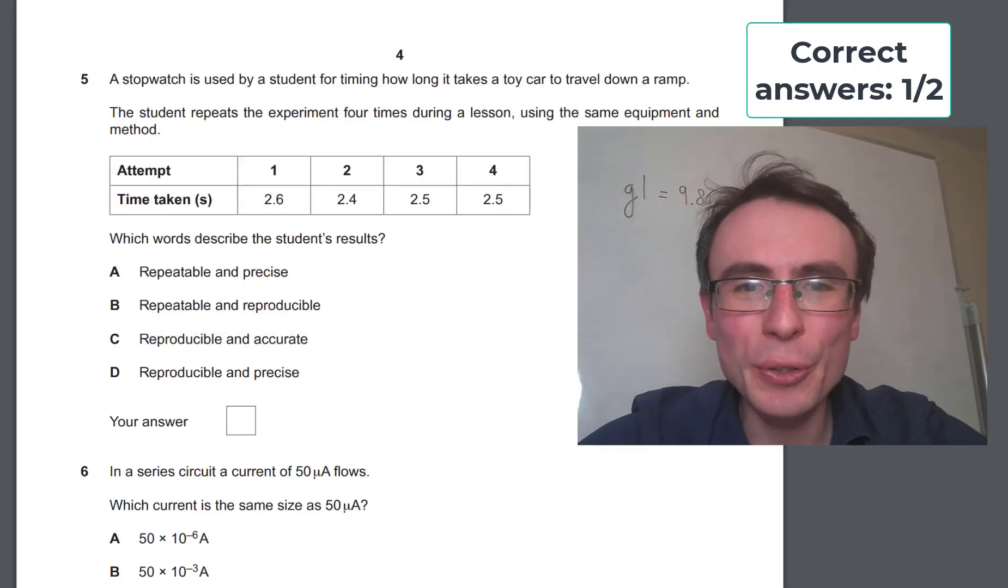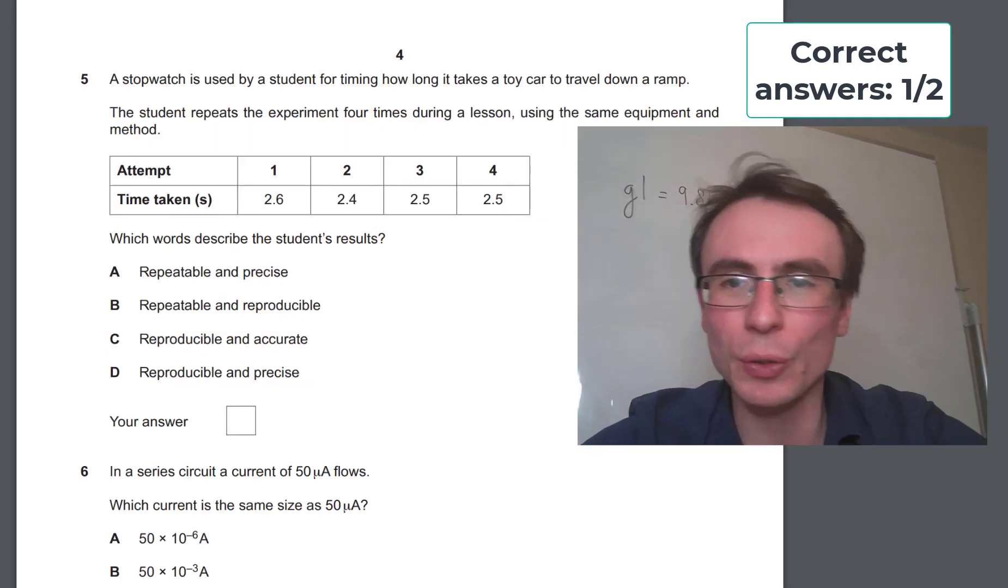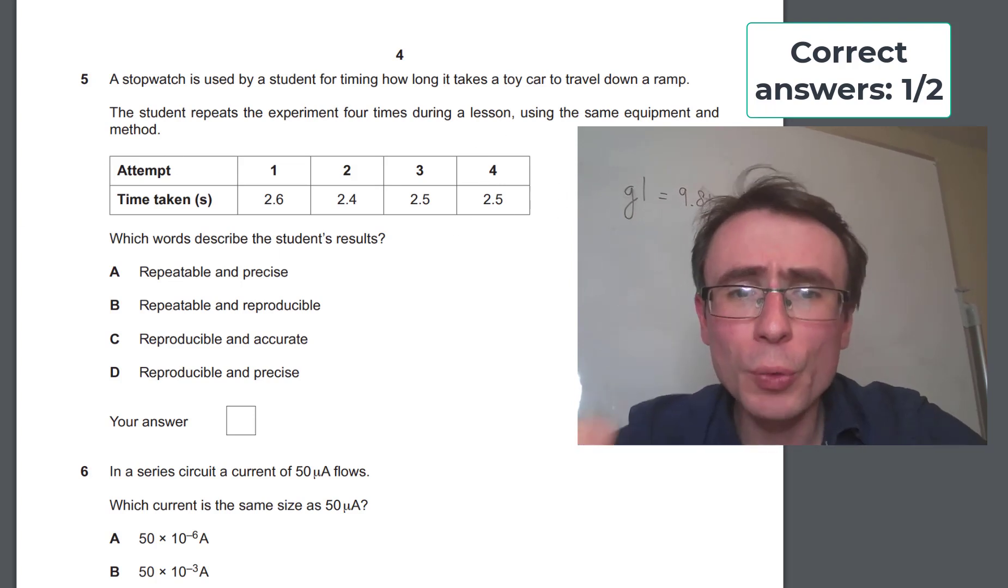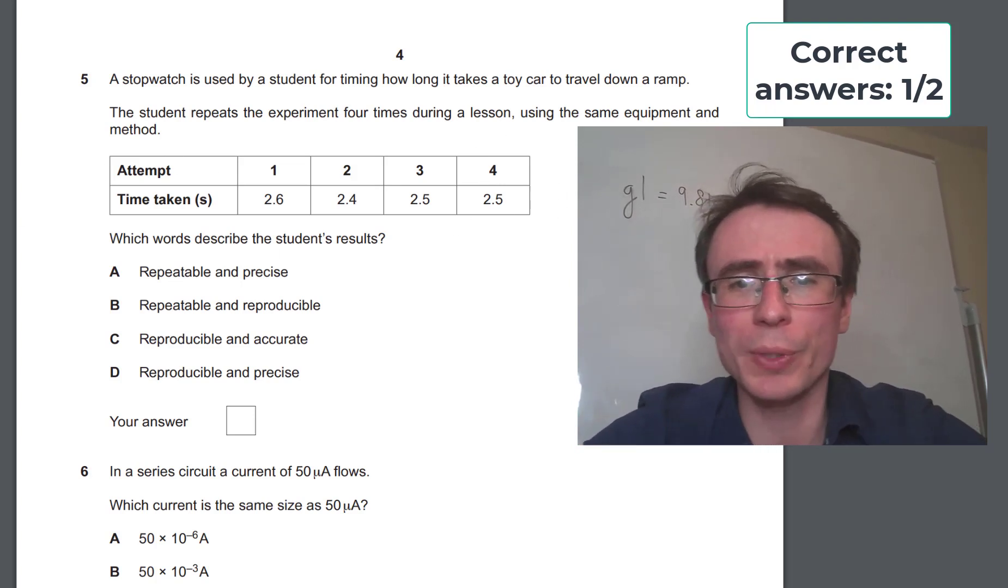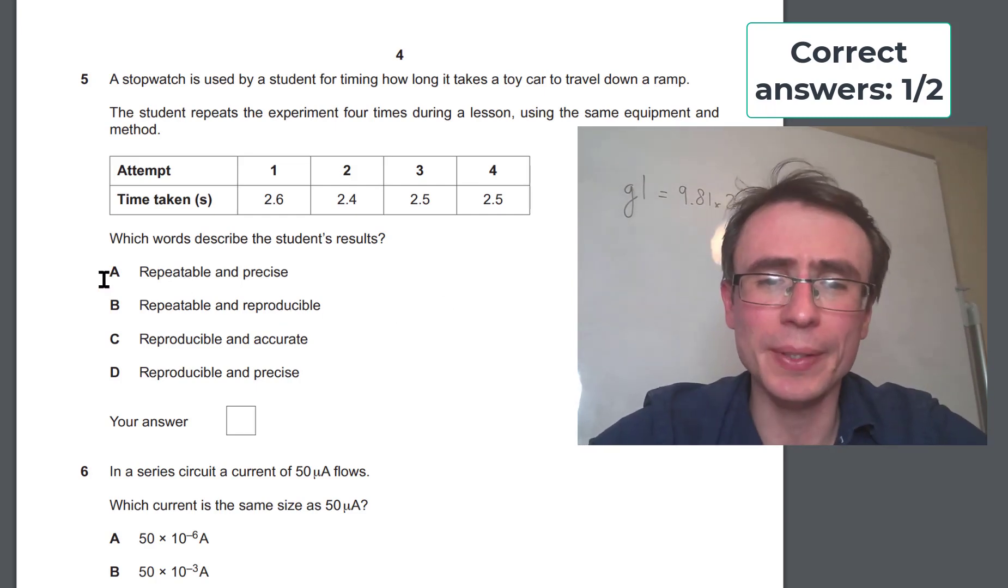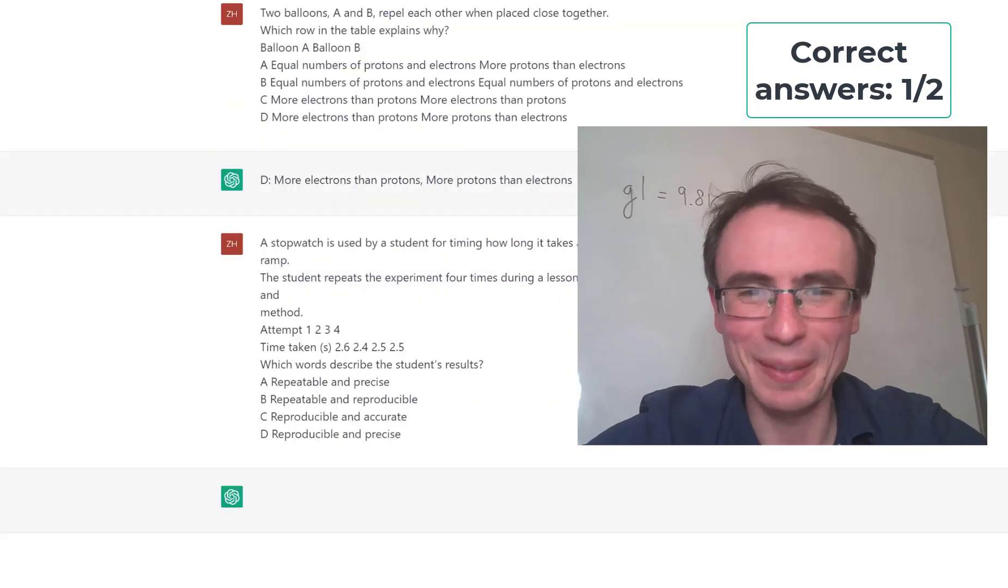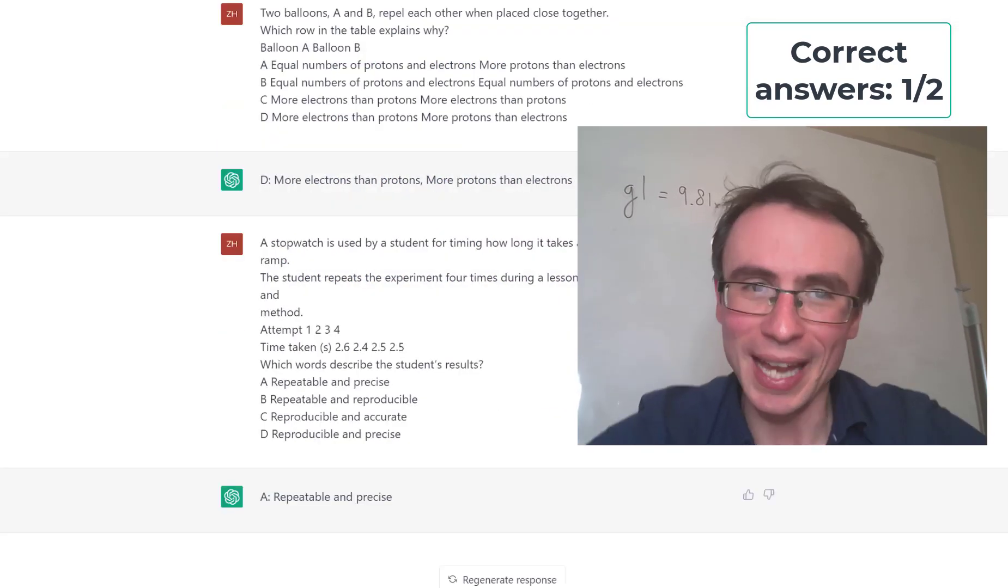Another one, a stopwatch is used by a student for timing how long it takes a toy car to travel down a ramp. We have the results across here. Which words describe the student's results? The correct answer here is A, repeatable and precise. Putting those in, curious to see how it does in this one. It's gotten it correct.